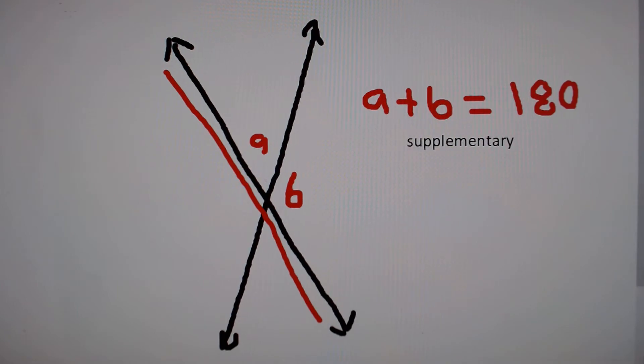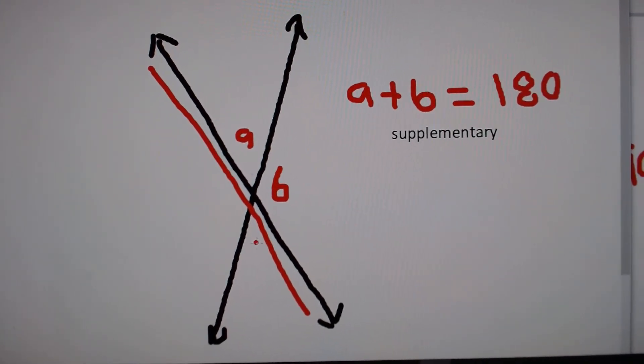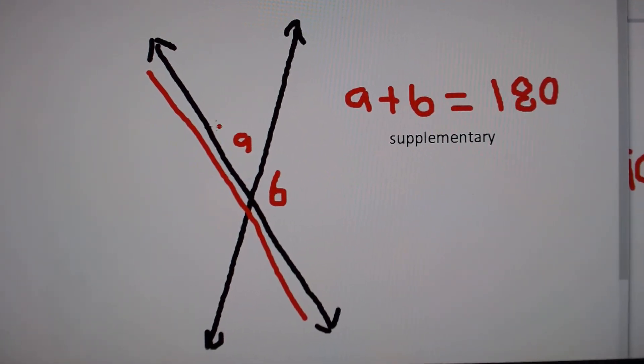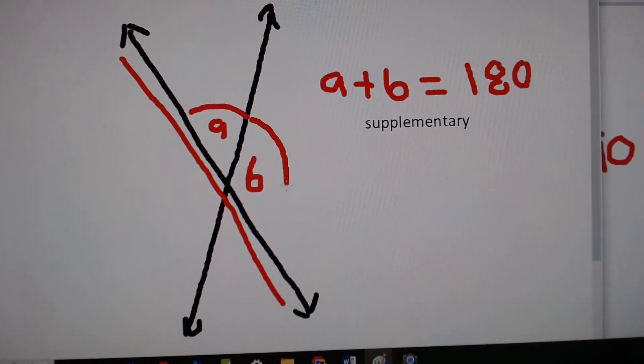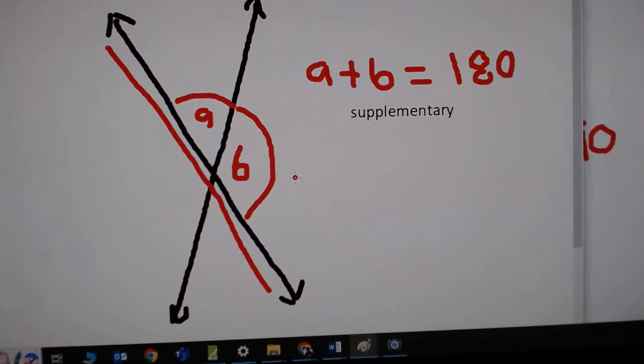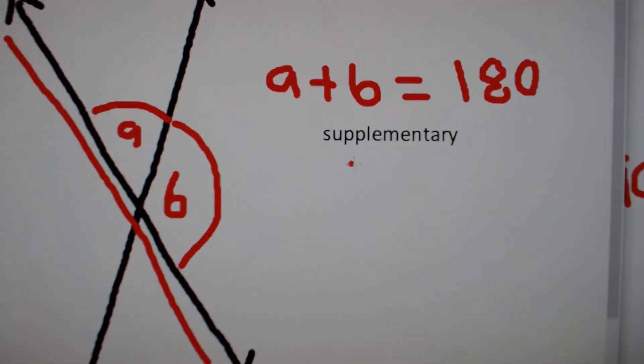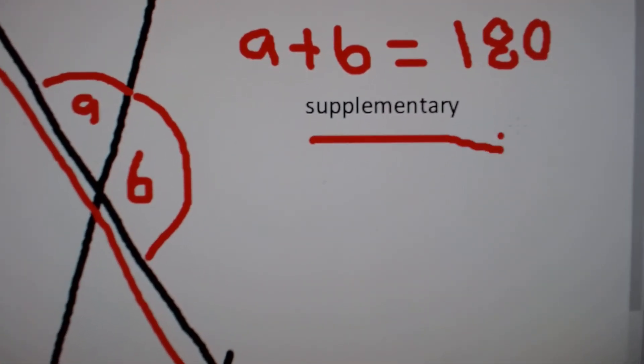We get the 180 degrees from a straight line. So if we take the measure of angle A and add it to angle B, it would be 180 degrees, making it a supplementary angle.